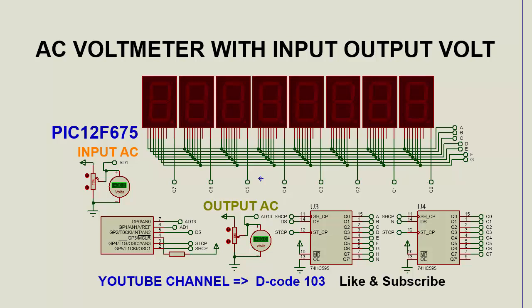This IC 74HC595 decreases the load and reduces the requirement of input-output pins from the microcontroller. Currently I am using PIC12F675 for this demonstration. Thank you for watching videos of my channel decode 103.